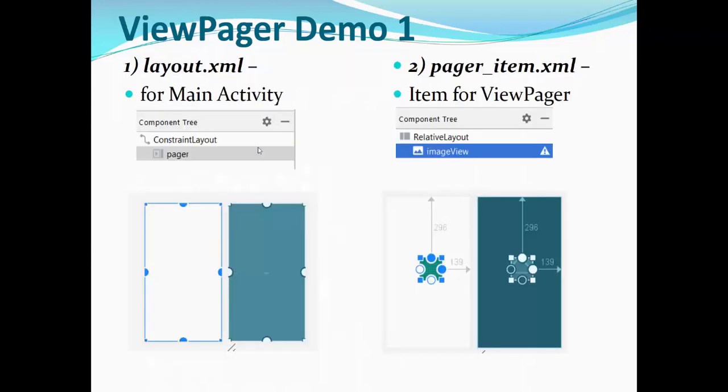First of all, we have Layout XML MainActivity with Pager. We have a simple Pager, Item XML, ItemViewPager, RelativeLayout with ImageView.